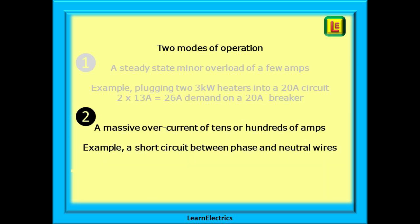The second mode is a massive overcurrent of tens or hundreds of amps that causes an instant response. For example, a short circuit between the phase and neutral wires or a significant fault to earth.